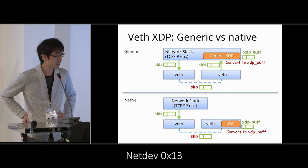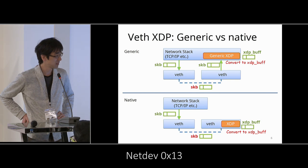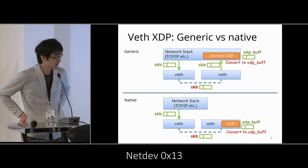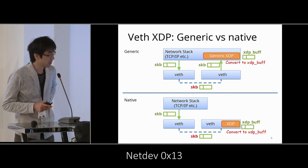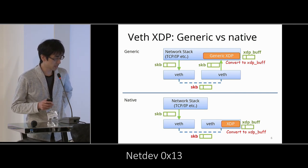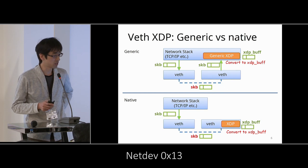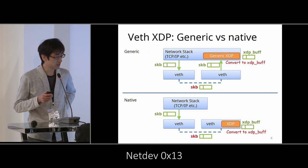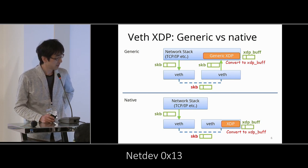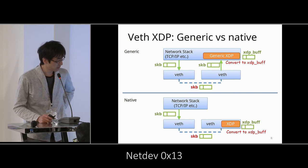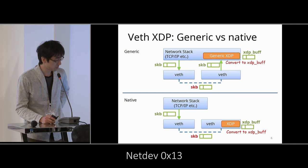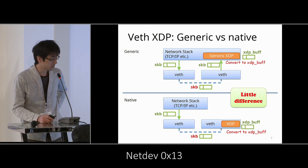Let's compare generic and native XDP for Veth. In a common use case, the network stack passes SKBs to a Veth device, and the Veth device forwards SKBs to its peer Veth device. In the generic case, the Veth device passes the SKB to the upper-layer network stack where generic XDP runs. In the native case, XDP is executed within the Veth device itself. The difference is small in terms of placement, but there is a performance difference.